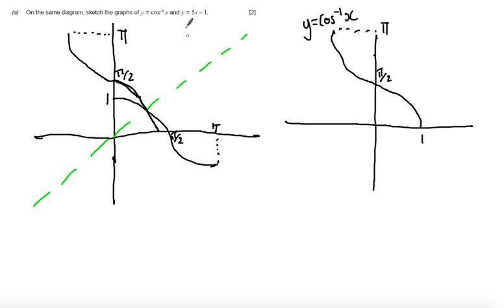So then it says to sketch the graph of y equals 5x minus 1. What I know is this is a linear graph. It's got a positive gradient, and it's going to cut the y axis at minus 1. So it's going to come up something like this. And this will be the line y equals 5x minus 1.